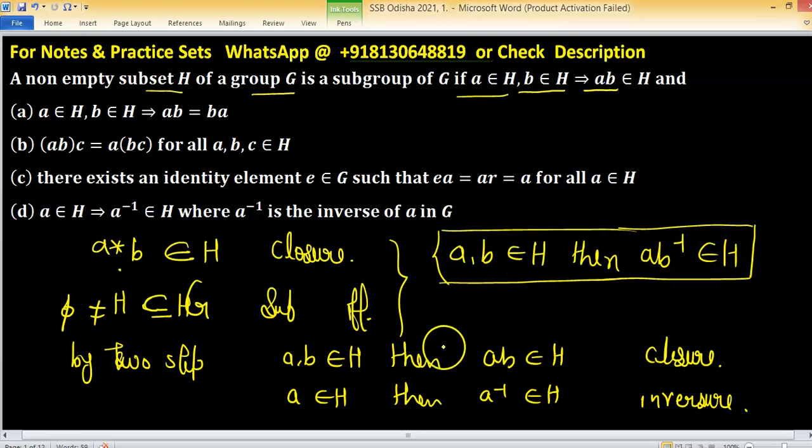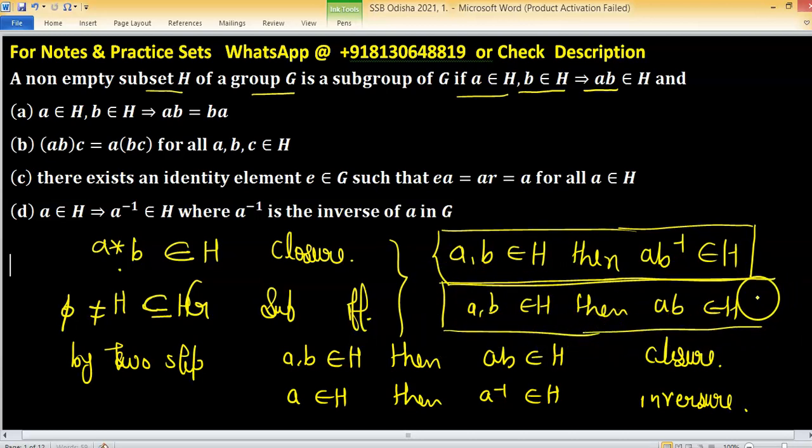You can apply these two tests on infinite or finite whatever the set. But when H is finite, then we say there is another test we call finite subgroup test. And in this, if A, B belongs to H, then AB belongs to H. This is only closure property. So closure property is sufficient to prove H is a subgroup if H is finite.